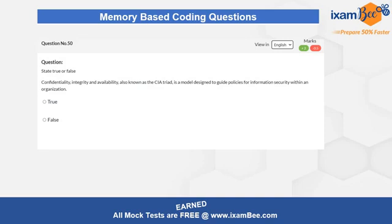The last question for this video series is related to a statement about the CIA triad, and what kind of organization follows this guide policy for information security. You have to clearly state whether the particular statement is true or false. With that, you will have all 50 questions done.